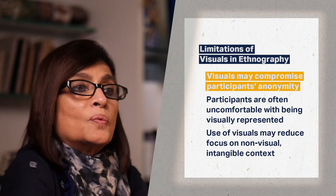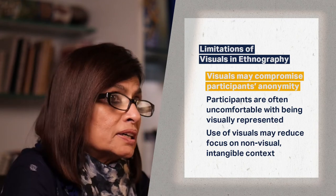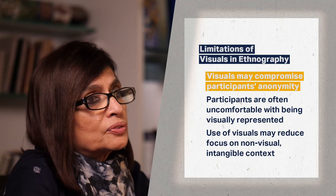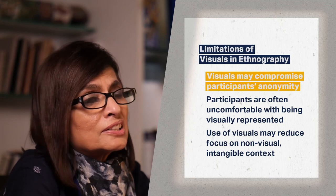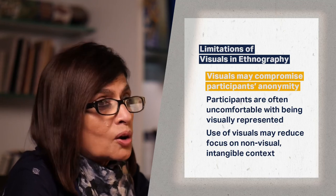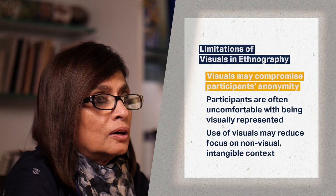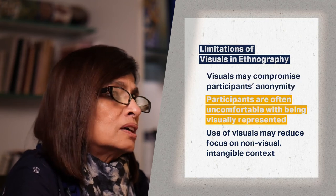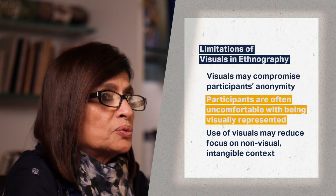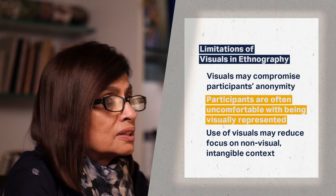But there are limitations to the use of visuals in ethnography. In using visual mediums, particularly film and photography, it is difficult to maintain the privacy and anonymity of our participants. Also, people are often uncomfortable being represented visually before an audience they might not know. Moreover, participants have less control over where their images may travel in today's internet age.